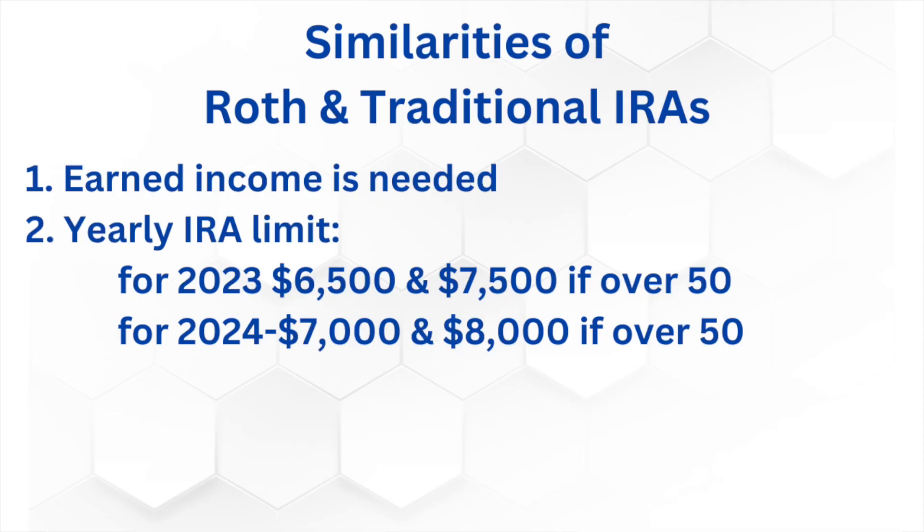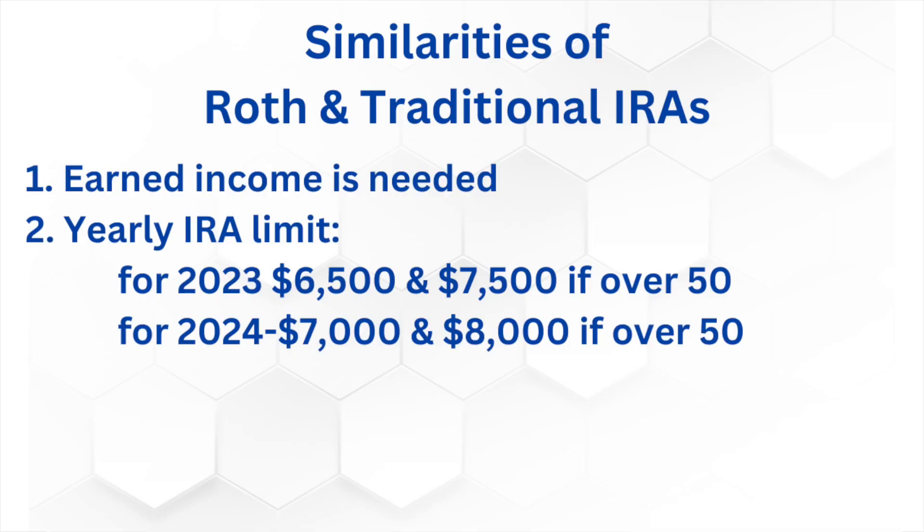The second similarity is about contribution limits — these determine the maximum amount you can deposit into a Roth or traditional IRA. For both types, the yearly limit in 2023 is $6,500, or $7,500 if you are over 50. In 2024, these limits increased to $7,000 and $8,000 for those over 50. One important point: the contribution limits apply to the total of your Roth and traditional IRA contributions combined. If you have both types, your combined contributions cannot exceed $6,500 in 2023 or $7,000 in 2024. Exceeding these limits requires correction — withdrawing the excess amount is necessary to stay within the tax law limits.